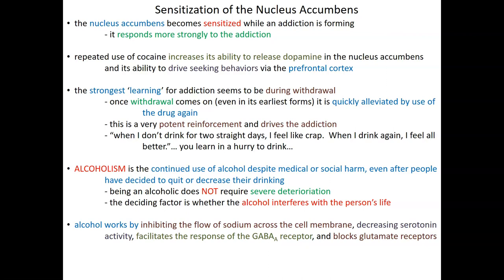How does alcohol work? It's an inhibitory molecule. It decreases the flow of sodium across the cell membrane, quieting cells' ability to communicate. It decreases serotonin activity — our alertness neurotransmitter. It facilitates the response of GABA receptors, which tend to be inhibitory, and it blocks glutamate receptors, which tend to be excitatory. So alcohol inhibits a lot of our neurological activity. But insidiously, it also increases dopamine release in the nucleus accumbens. If alcohol did everything except trigger dopamine release, it would simply quiet and inhibit us, and likely not be nearly as addictive. But when alcohol is consumed, dopamine is released, fooling our brain into thinking that was evolutionarily advantageous — and so we're driven to do it again.